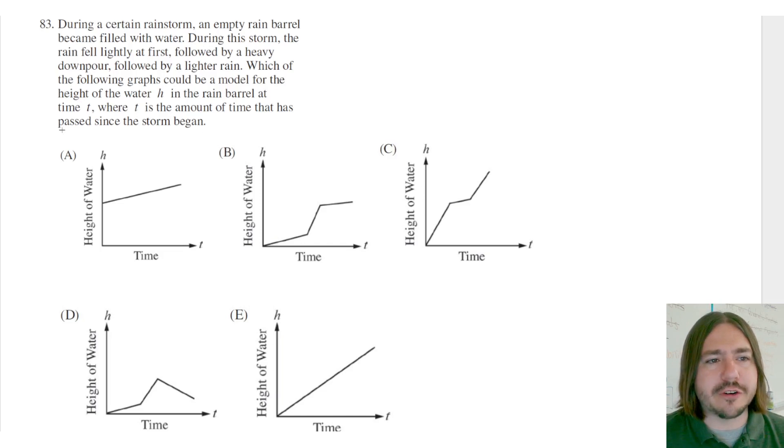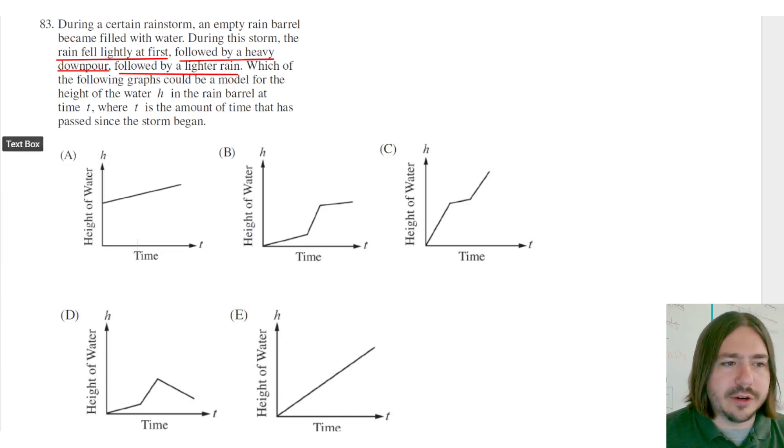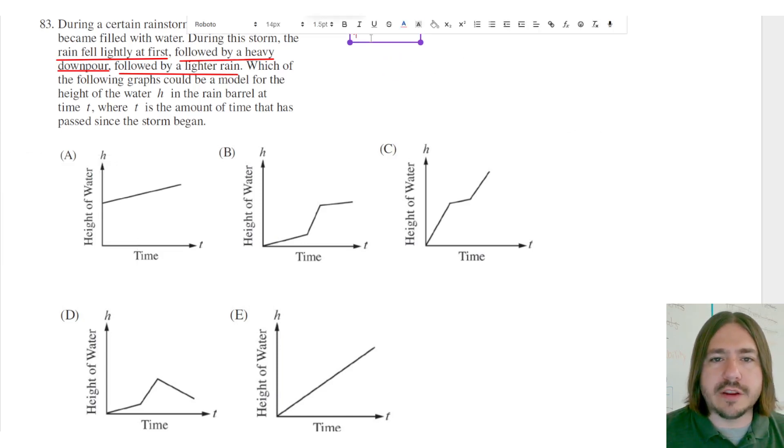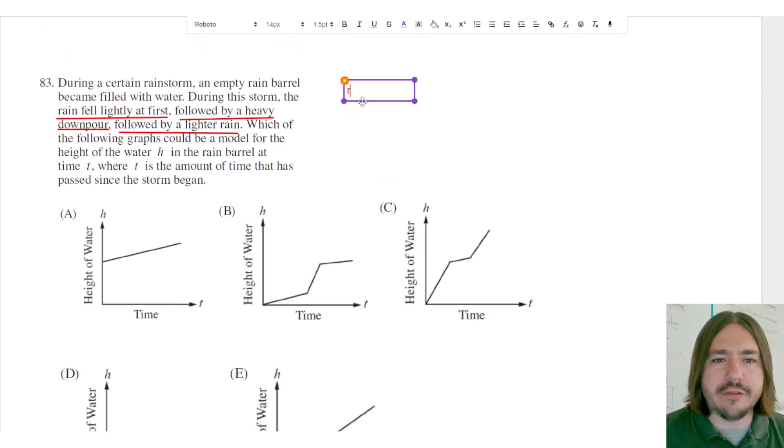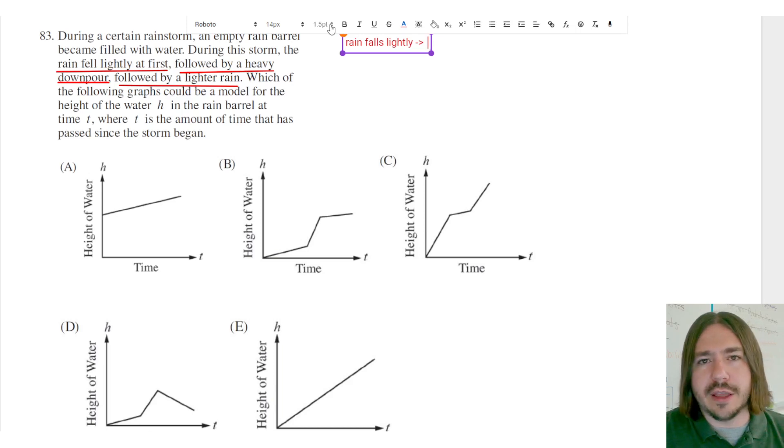So it says at first the rain fell lightly. So the rain fell lightly at first, followed by a heavy downpour, followed by a lighter rain. So if the rain is falling lightly, let me make a little note here. If the rain is falling lightly, then we should have a smaller rate of change. Okay, basically the amount of water is going to increase slowly. So if the rain falls lightly, we're going to look for a section of the graph that has a small slope.